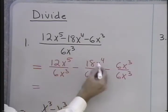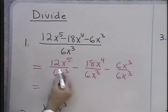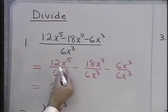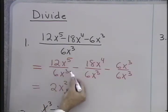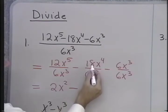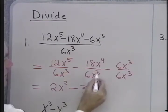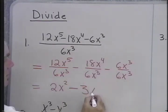Then, it's just a matter of simplifying each term individually. 12x to the 5th over 6x cubed will be 2x to the 2nd, when I divide coefficients and subtract exponents. Minus 18 divided by 6 is 3. x to the 4th over x cubed is x.